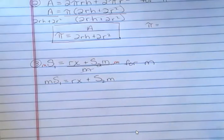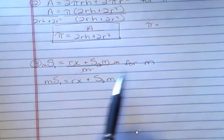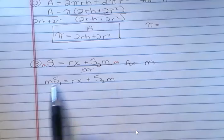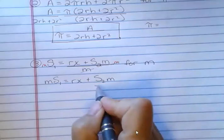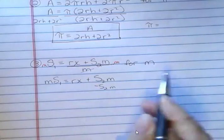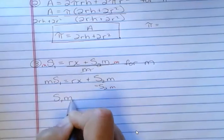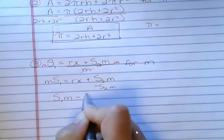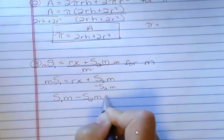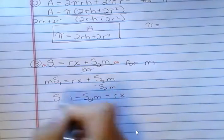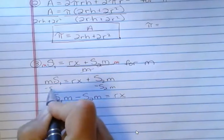But what I want to do is solve for m, and I need to get those terms on the same side. So I'm going to move this one over. And I'm going to say, let me rewrite this so that it looks consistent. s sub 1m minus s sub 2m equals rx because I subtracted s sub 2m.